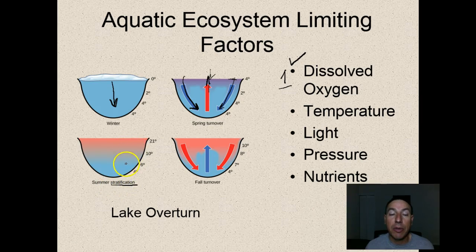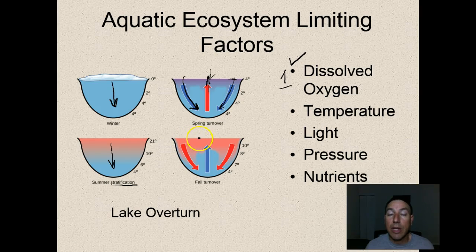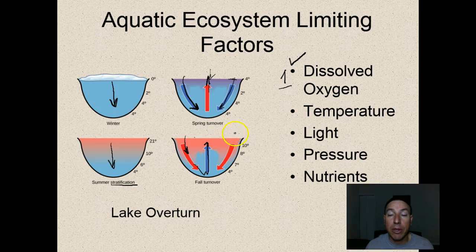In summer we get what we call stratification, where the water body divides itself into different layers based on temperature. At the surface it's warmest, and as we go deeper it gets colder until it reaches 4 degrees Celsius at the bottom. When fall comes around, there's another turnover event - the warm surface water starts to cool and sink, pushing cold water back up and creating another nutrient infusion. This lake overturn is very beneficial for bringing nutrients and dissolved oxygen back up to the surface where light is, enabling primary productivity.